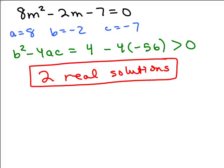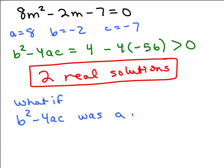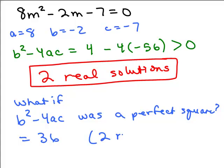One more thing: what if the discriminant was a perfect square — what if b squared minus 4ac were something like 36? You'd have plus the square root of 36 and minus the square root of 36, so the solutions would be two rational solutions — no square roots at all. That tells you even a little bit more information, just in case you were interested.